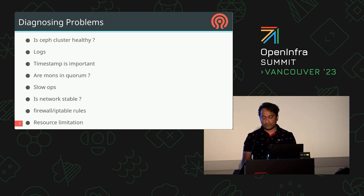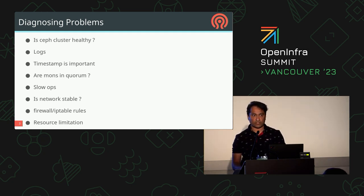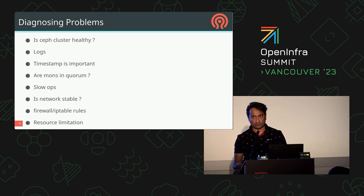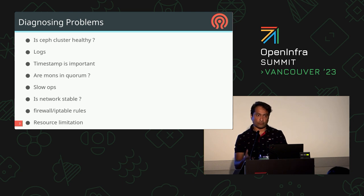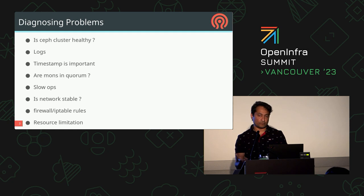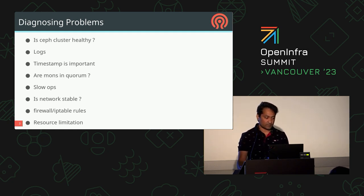Timestamps are really important when you are talking about problems. You are seeing some problems but don't know what really happened. You want to track it down to what really happened before the cluster started seeing the problem — find the time when things started going wrong and go back to previous events, like OSDs going down, being marked down, crashing, or changes in the environment like network changes.